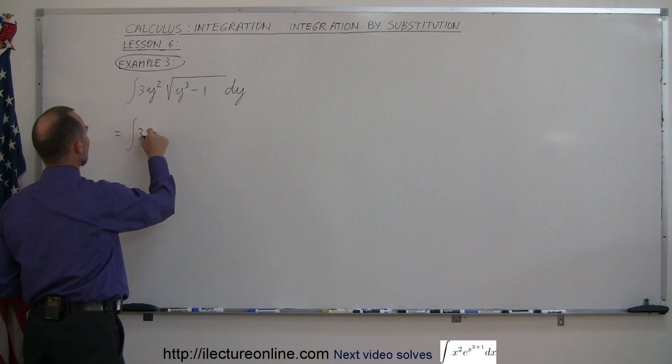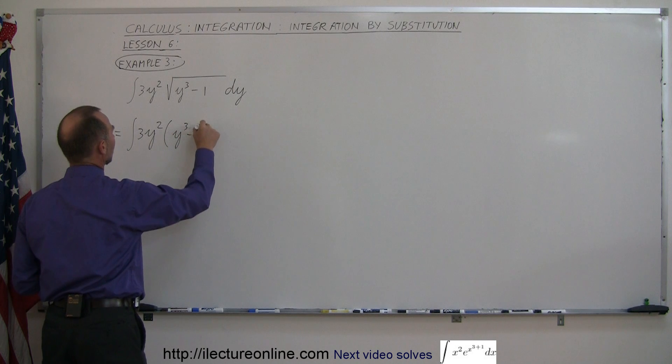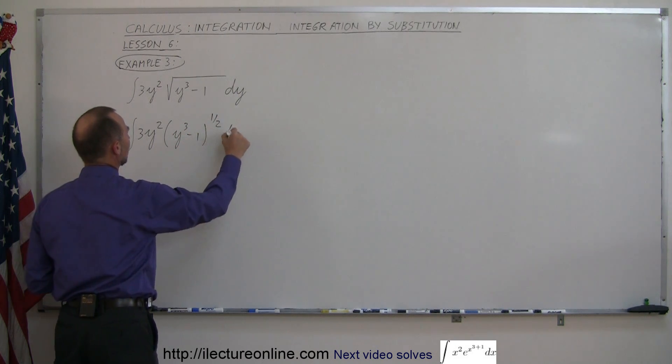This is equal to the integral of 3y squared times the quantity y cubed minus 1 to the 1 half power dy.